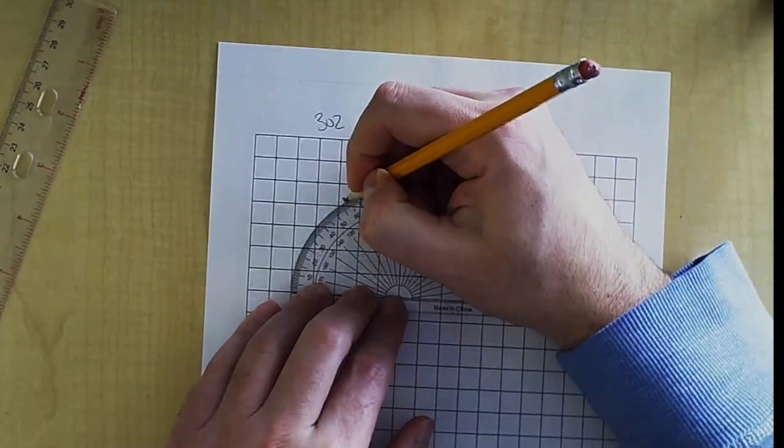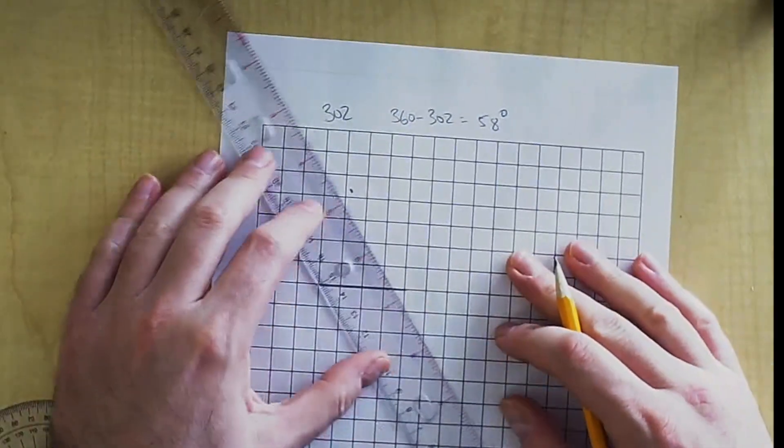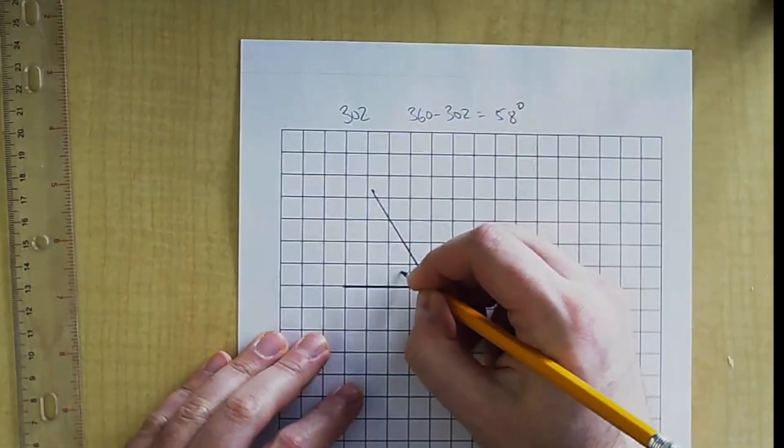Now you measure 58 degrees. That's right before 60. Connect it. You now drew a 58 degree angle. And the rest of it is 302 degrees.